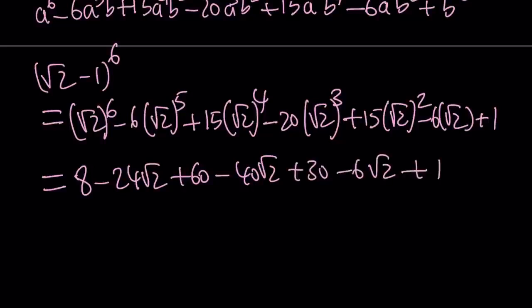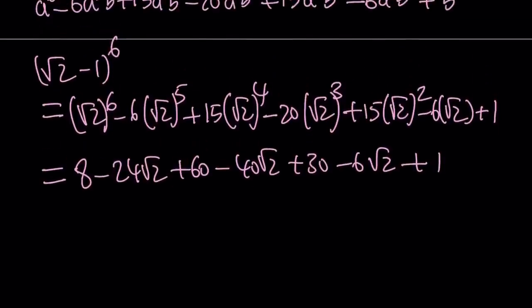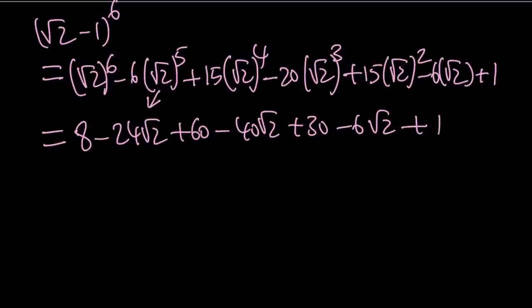Now, how I got those values — for example, if you're raising square root of 2 to the 6th power, you can just square it and then cube it, and you'll get 8. And notice that this is important: when you raise square root of 2 to an odd power, it's going to contain a square root of 2, so it's still going to be irrational. That's an important concept.